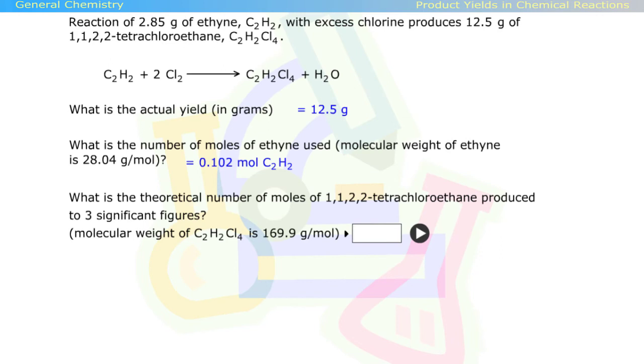What is the theoretical number of moles of 1,1,2,2-tetrachloroethane produced to three significant figures? If you said 0.102 mole, that's correct.